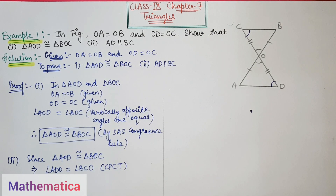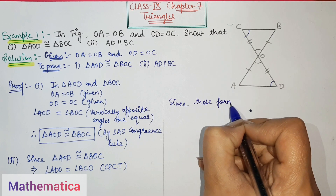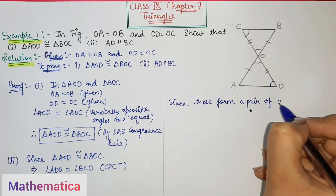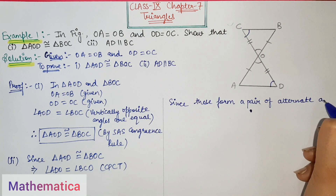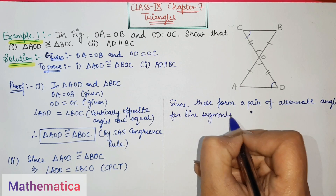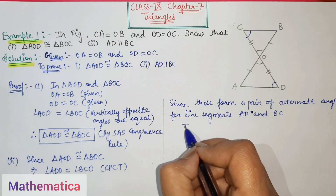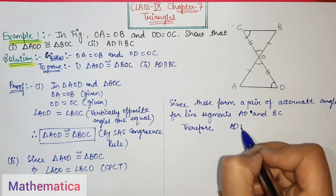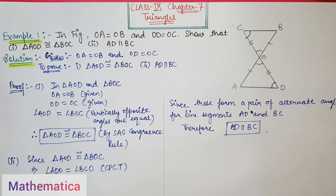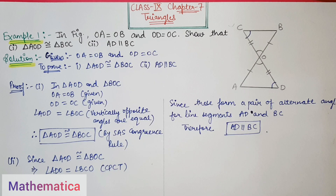CPCT means corresponding parts of congruent triangles are equal. Since these two angles are equal, they form a pair of alternate angles for line segments AD and BC, therefore AD is parallel to BC. If you have any doubt you can comment; if you like it, share it and subscribe. See you in the next example.